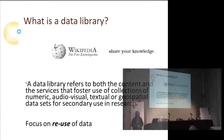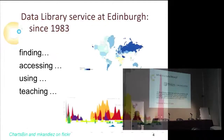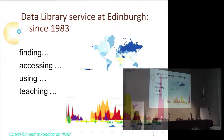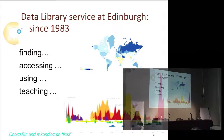Our data library service at Edinburgh has been around since 1983. The reason is that the first population census data available in digital form for analysis was the 1981 census. The library wasn't really ready at that time to deal with digital forms of data, so the data library was created. We were actually part of the computing service for many years, but now information services are all merged — one big happy family between IT and librarians — and the data library has remained intact all this time.